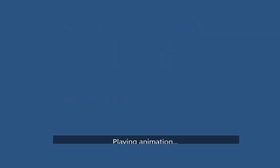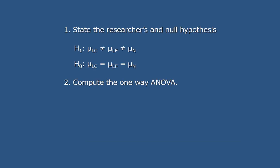The first step is to state the researchers and null hypothesis. In this example, I'm going to hypothesize that the average amount of weight loss in the population for people on a low-carb diet is not equal to the average amount of weight loss in the low-fat diet and not equal to the average amount of weight loss for those on a normal diet. The null hypothesis says I'm wrong — that there's no difference in weight loss between subjects in the three different types of diet. Because I'm comparing more than two groups, I'm going to need to compute the one-way analysis of variance.